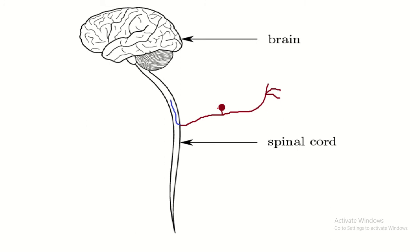This is the pseudounipolar neuron, or functionally this is a sensory neuron. It has a single nerve process which is divided into two: this is the peripheral process, and this is the central process. The terminal portion of the peripheral process is converted into a receptor. The receptor first receives the sensory information, then it passes through the peripheral process, then the sensation goes through the central process.